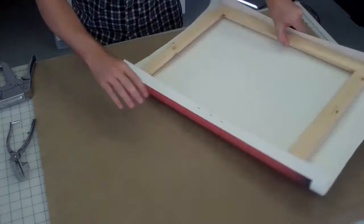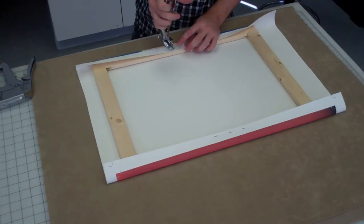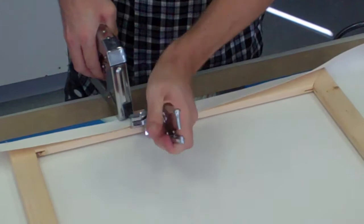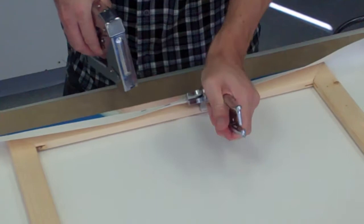Stretch the canvas over the opposite edge. This is where you want to make sure that the canvas is nice and snug. Place another staple on either end of the center staple.